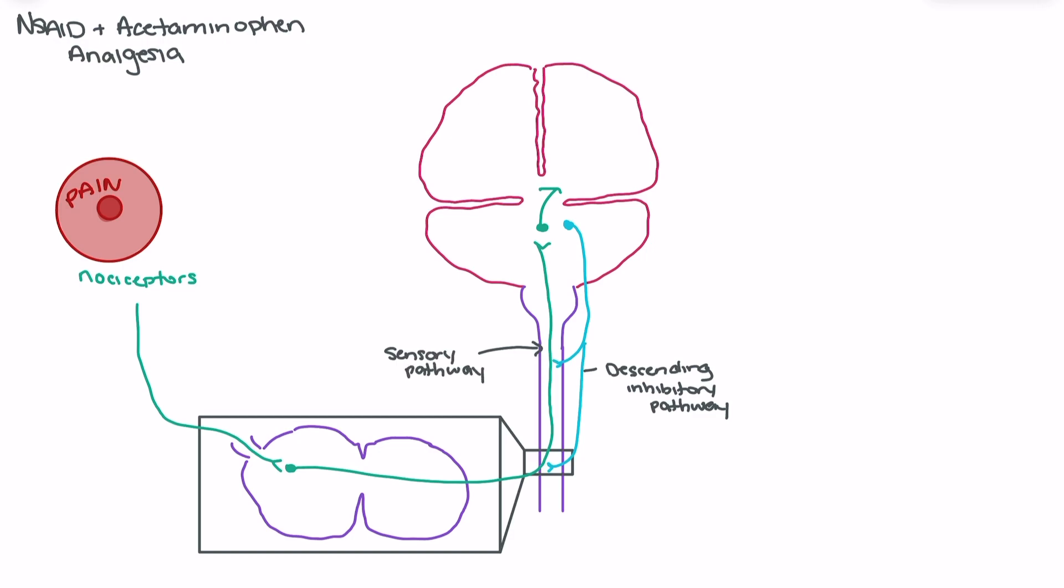Now, the way that an analgesic like NSAID or acetaminophen targets pain is at the peripheral location of the pain response itself. When we have damage to the cell membrane - the phospholipid layer of the cell membrane.